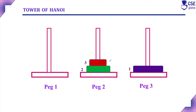We have moved N-1 disks from peg 1 to peg 2, and the largest disk directly from peg 1 to peg 3. Third step: move N-1 disks from peg 2 to peg 3, using peg 1 as auxiliary.